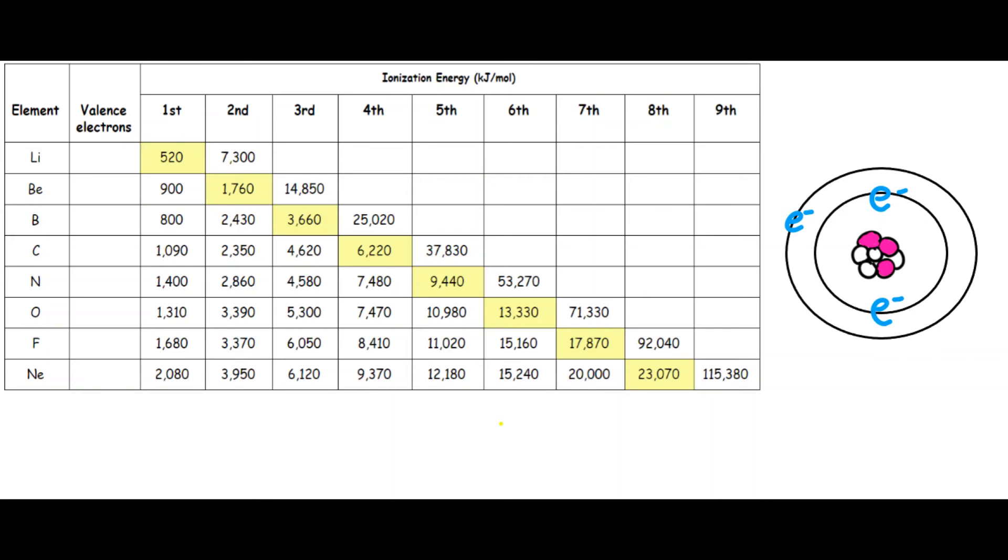Take a look at this chart. Using lithium as our example, the first ionization energy is much lower than the second, meaning that there is one electron that is very loosely bound and easy to remove, so there is one valence electron.